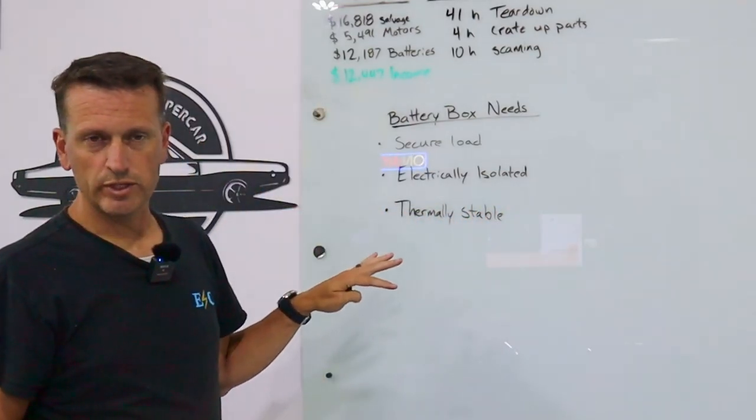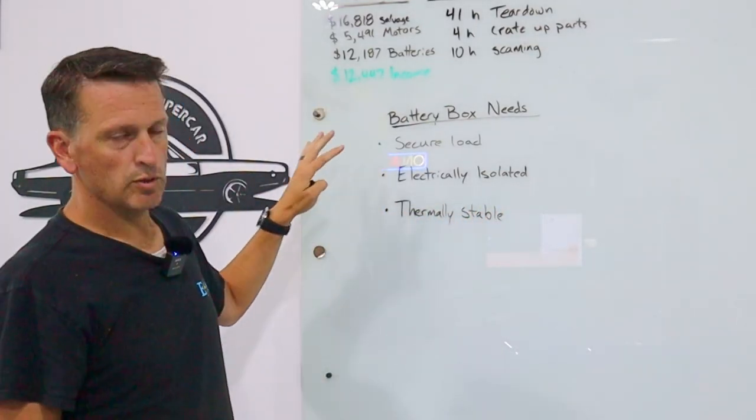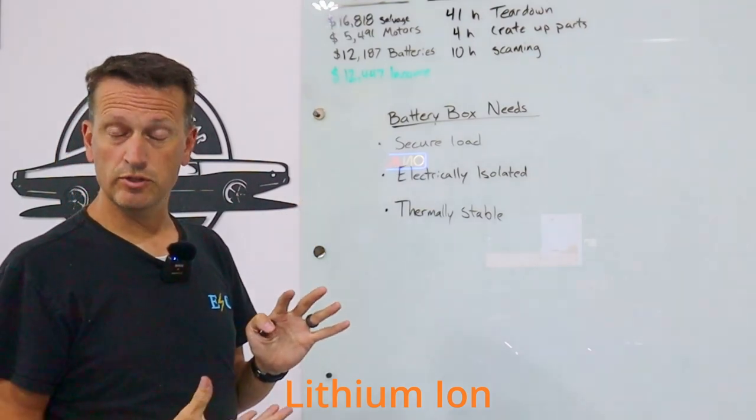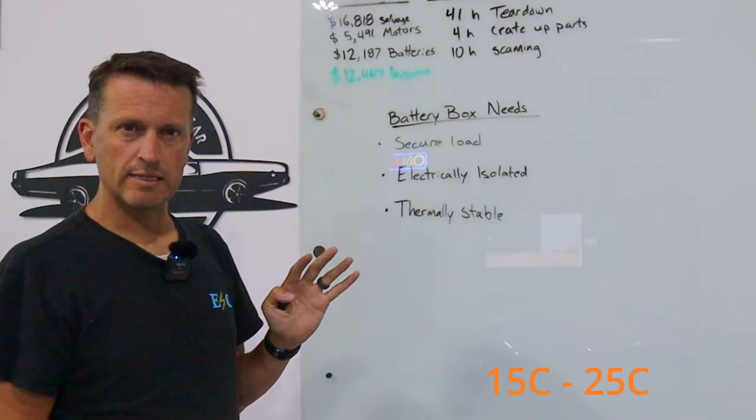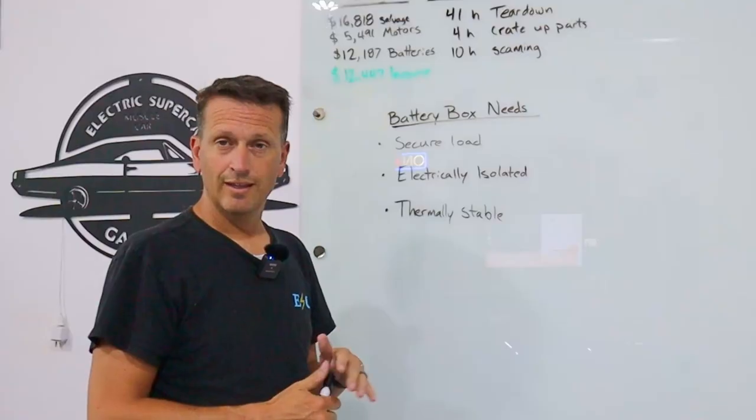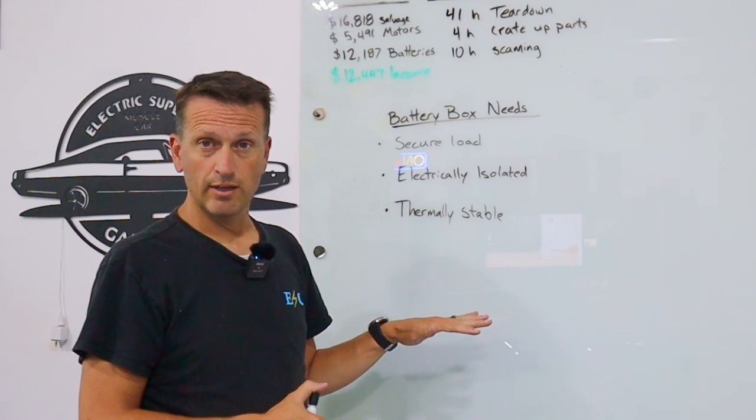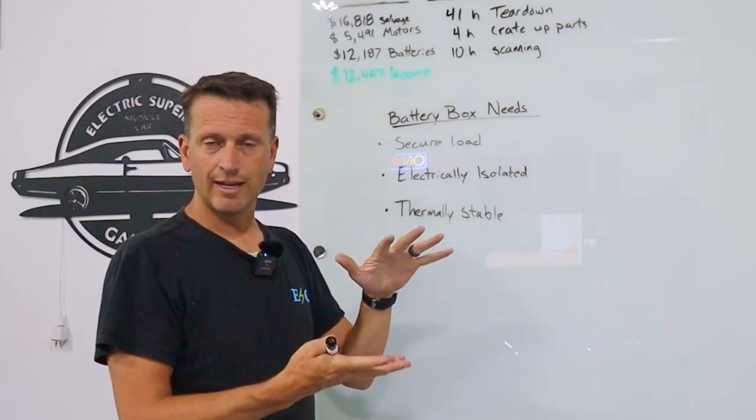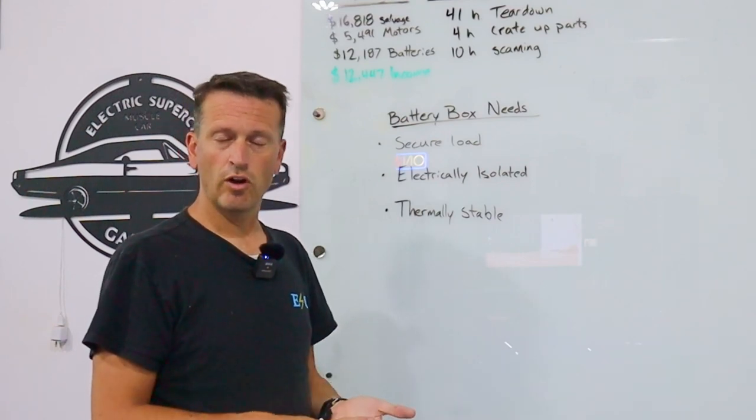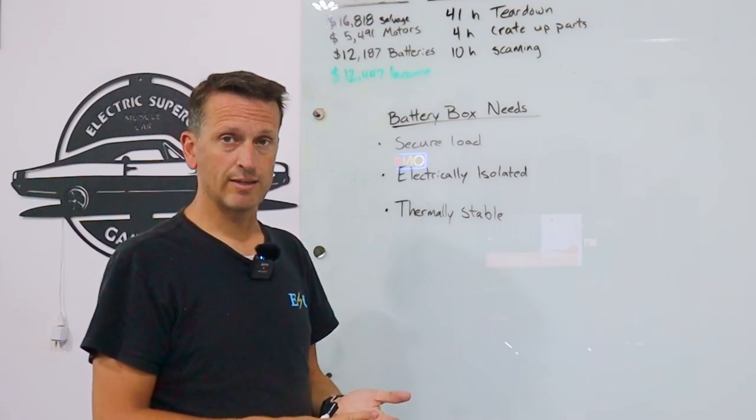So I'm writing thermally stable. What this means is your batteries really like to be around the same temperatures that humans like to be. I'm going to say between 60 and 80 Fahrenheit. They can go down to even freezing or they can go up to about 140, but really ideally you'd like to keep them in that narrow band. That's where they charge and discharge the best.